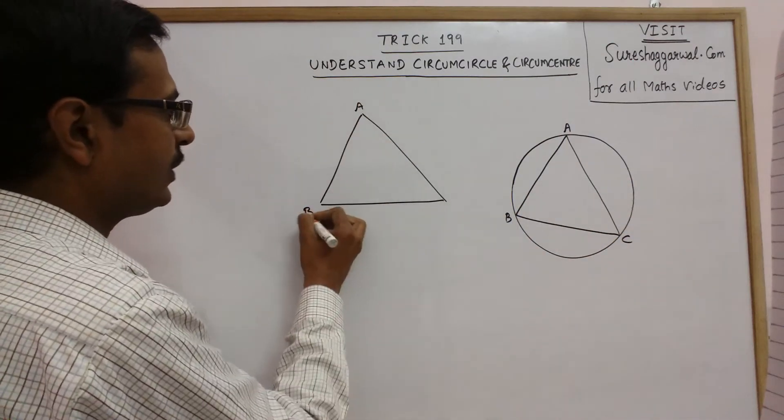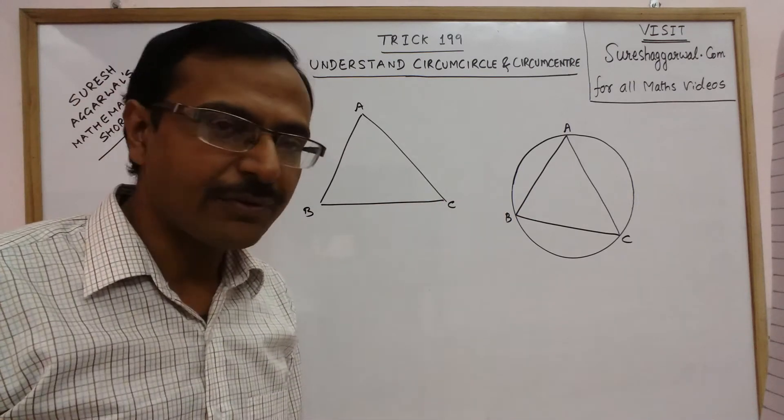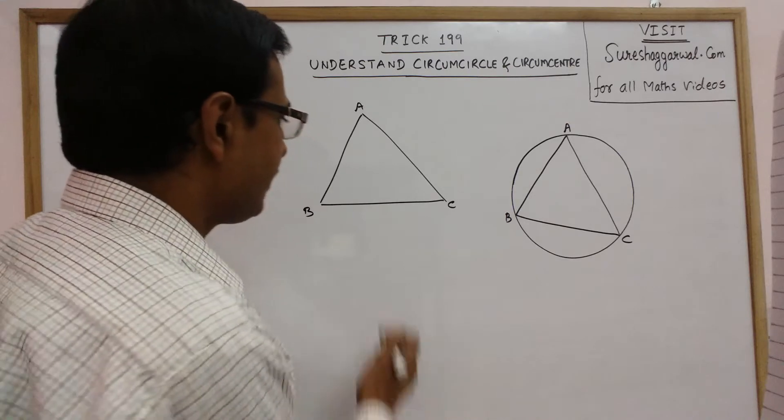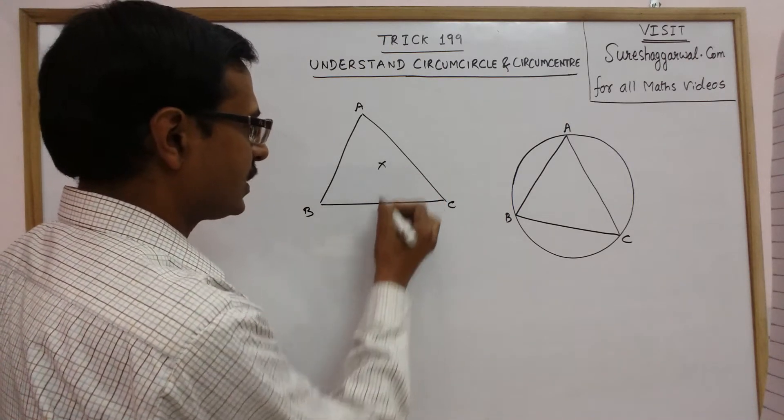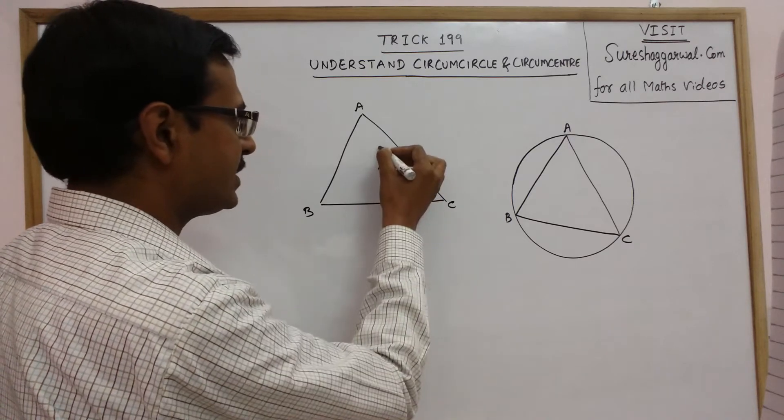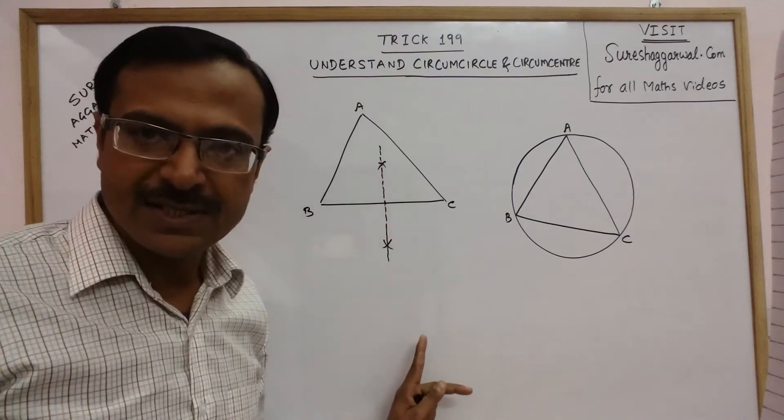What we do is, we draw the perpendicular bisectors of any two sides. If we draw the bisector of BC, suppose this is the bisector of BC, the perpendicular bisector of BC.